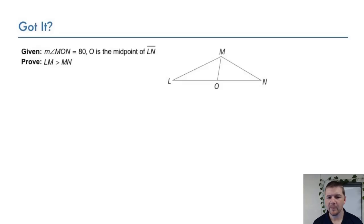Your turn. Given the diagram at the right, and that the measure of angle MON equals 80, and that O is the midpoint of segment LN, prove LM is greater than MN.